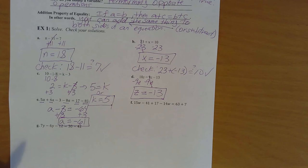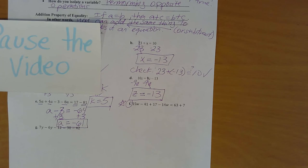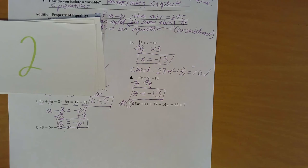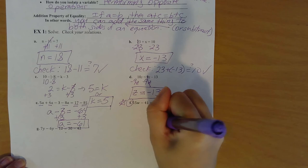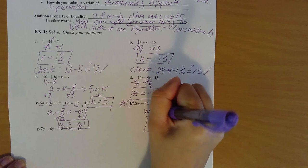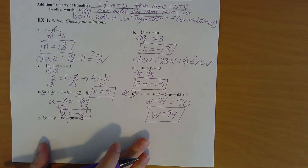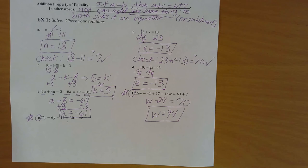Part f is pretty similar to part e, so pause your video, try some simplifying, and see if you can solve for w. Once you simplify, you're going to get w minus 24 on the left side and 70 on the right side. The answer is w equals 94.